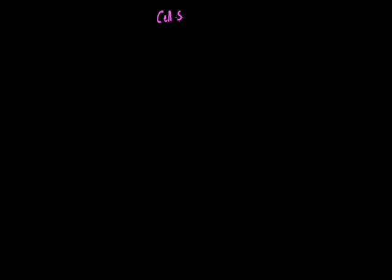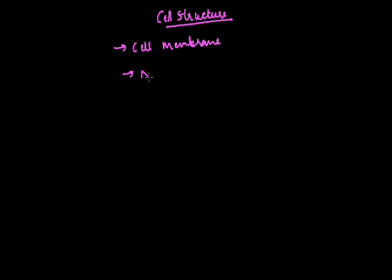Hello children, today we are going to read something about the structure of the cell or cell structure. Each plant or animal cell comprises the following parts: it consists of a cell membrane, a central part called the nucleus, and cytoplasm.